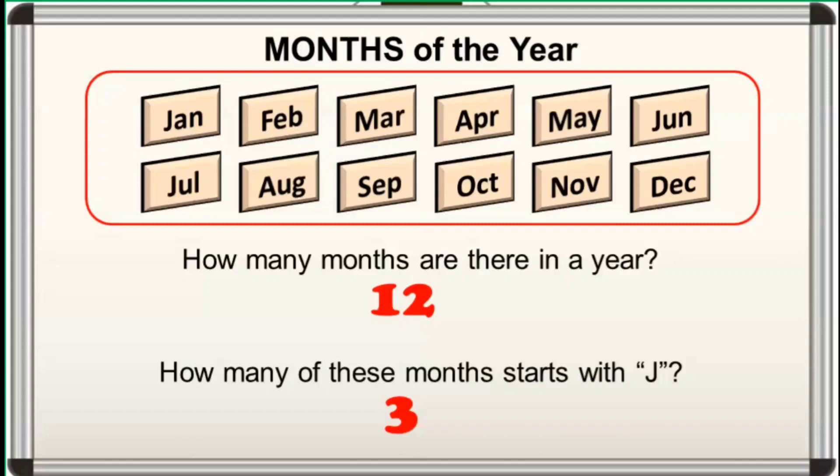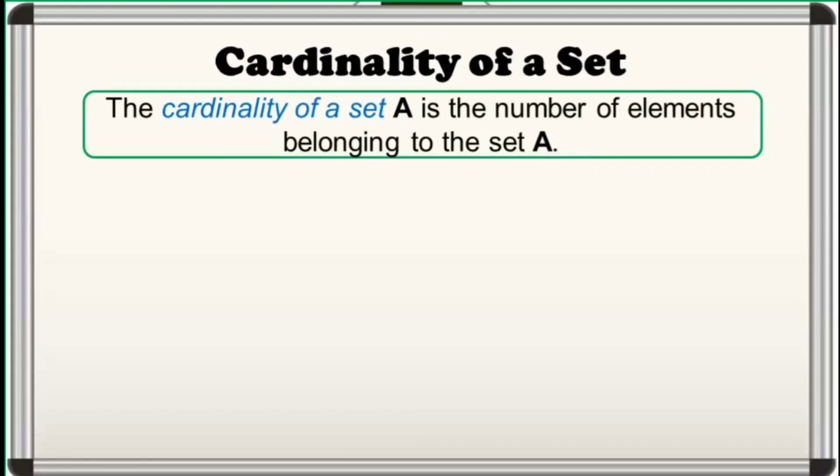If we consider the first set as the set of months in a year, then its cardinality is 12. Also, if we consider the second set as the set of months that starts with J, its cardinality is 3. Ano nga bang ibig sabihin ng cardinality of a set? The cardinality of a set A is the number of elements belonging to the set A. Sa Tagalog, bibilangin lang natin kung ilang elements meron ng isang set at yun ang kanyang cardinality.